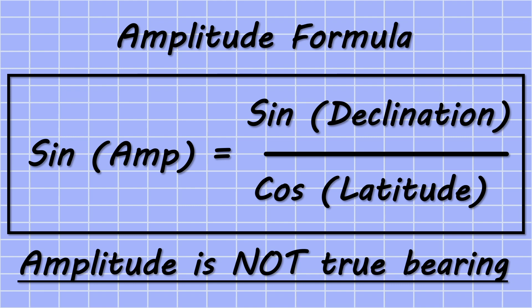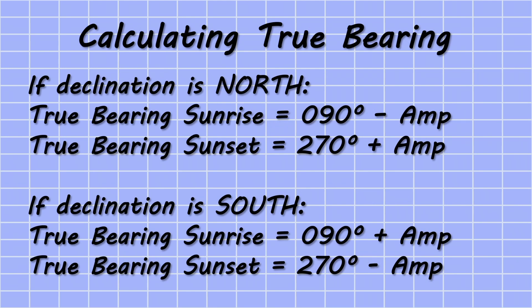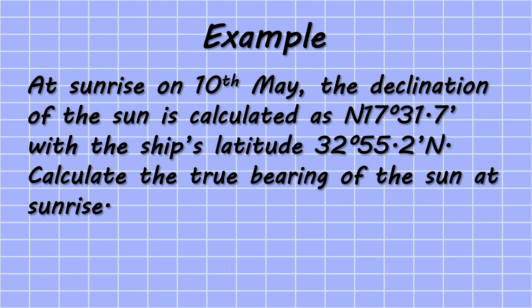Now that we've calculated the amplitude, there are four possible calculations to find the true bearing of the sun at sunrise or sunset. For a northerly declination at sunrise, we start with an initial bearing of 090 degrees and minus the amplitude. At sunset we start with 270 degrees and add the amplitude. If the declination is to the south, we use the same initial bearings but swap the operation: at sunrise we add the amplitude, and at sunset we minus the amplitude.